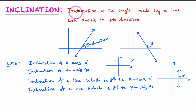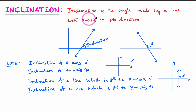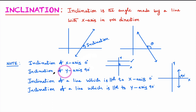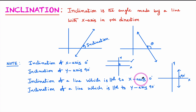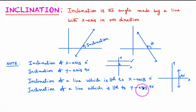Let's recap. Inclination is the angle made by a straight line with the x-axis in the positive direction. Inclination of the x-axis is 0 degrees. What is the inclination of the y-axis? 90 degrees. What is the inclination of a line which is parallel to the x-axis? 0 degrees. Inclination of a line which is parallel to the y-axis? 90 degrees.